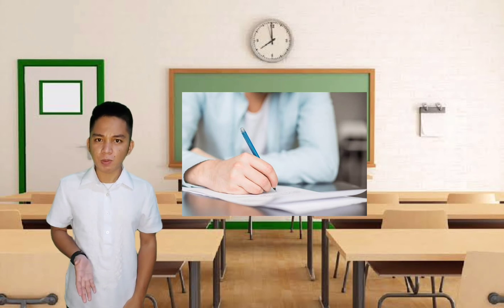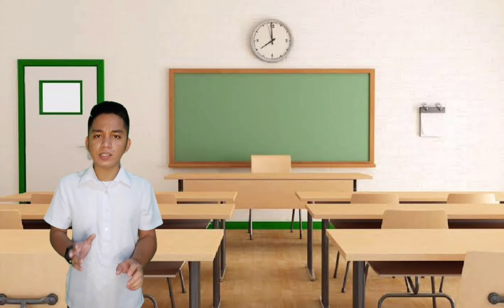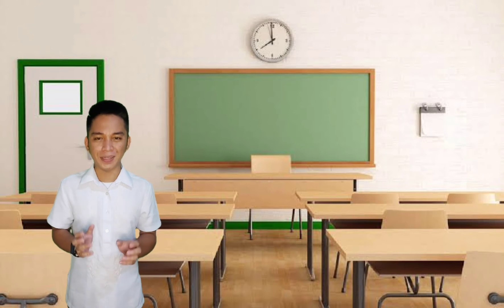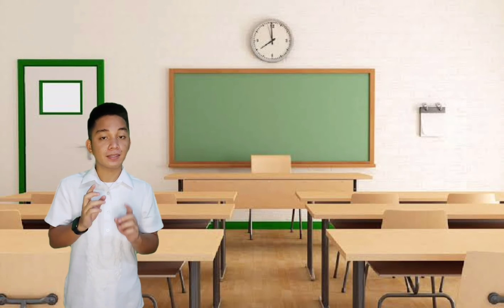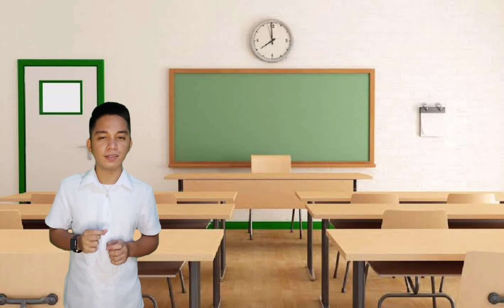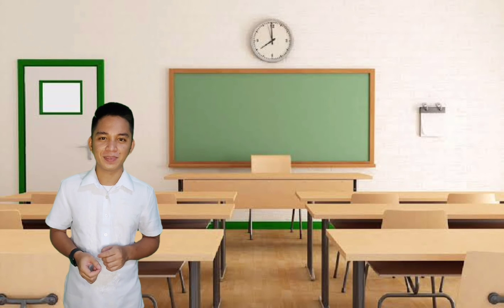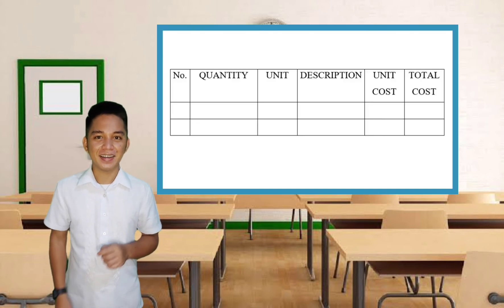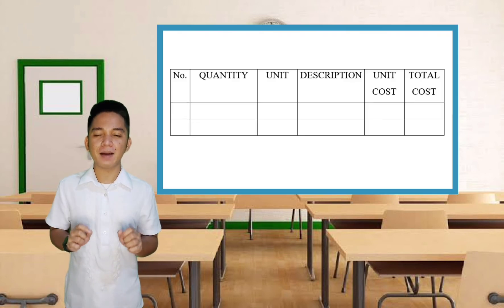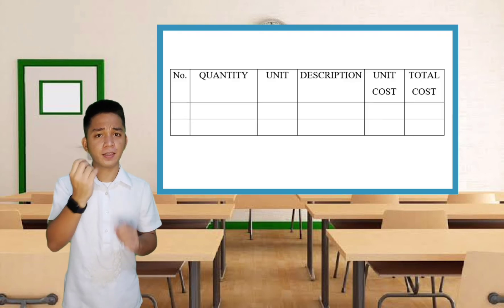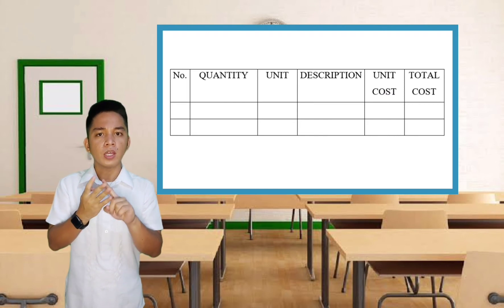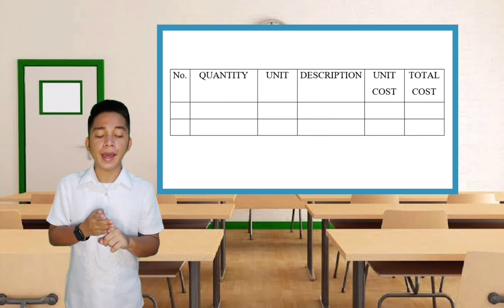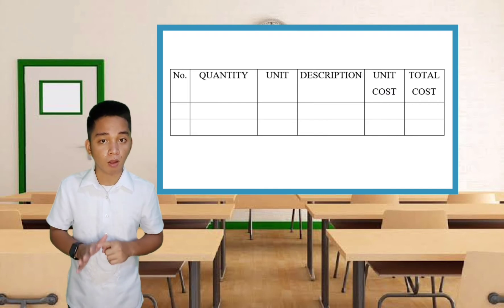There are a couple of requisition slip formats, but I will just present a simple one. Here it is. This is an example of a requisition form. It has number, quantity, description, unit cost, and total cost.